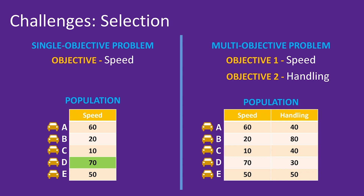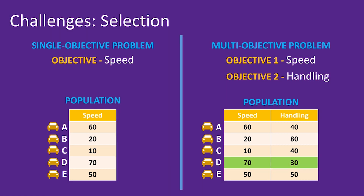With the single objective problem on the left, it's obvious which one is the best solution — it's simply the solution with the best objective value. Now look at the multi-objective problem. Which one is the best? If we pick the solution with the best value for objective 1, you can see it doesn't have the best value for objective 2. And if we pick the solution with the best value for objective 2, it doesn't have the best value for objective 1. In this case, neither solution is better than the other.